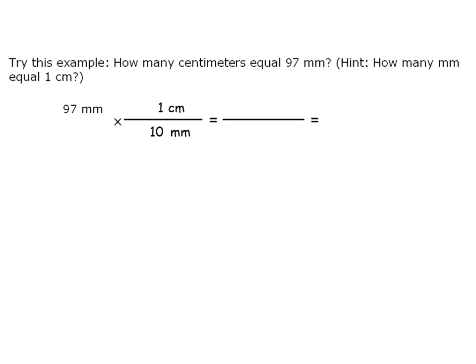Once you have that set up, it's just a matter of doing the math. So we can cancel millimeters. We're left with 97 times 1 on the top, which of course is 97, with our unit that remains centimeters divided by 10.